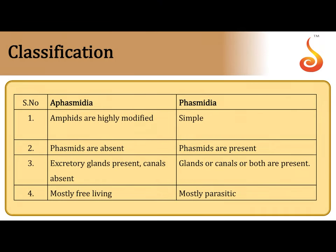Phylum Aschelminthes can be classified into two major classes. Aschelminthes includes the roundworms, which are pseudocoelomate and the first phylum to exhibit an organ system level of organization. We can classify the phylum Aschelminthes into class Aphasmidia and class Phasmidia.